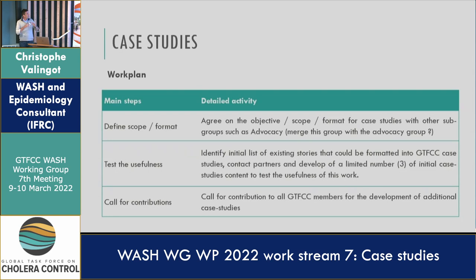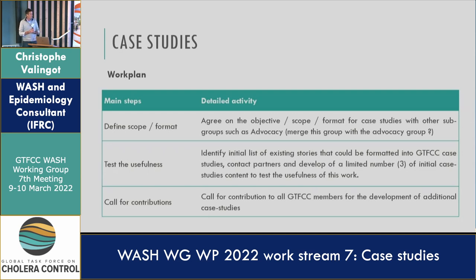So we framed the scope of work in three different activities. The first would be to agree on the objectives, scope, and format for case studies — and to do this not in isolation, but with other working groups, in particular the advocacy working group, because I think they will be the main users of those case studies. We can even think that this standalone working group on case studies could be merged within the advocacy working group.